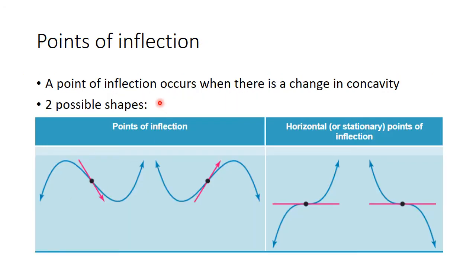Let's look at some pictures of points of inflection. A point of inflection occurs when there is a change in concavity — we would have concaving down, then at the point of inflection it becomes concaving up, or concaving up then concaving down. Note a very important point: the gradient of the tangent at this point doesn't have to be zero. The important part of points of inflection is the concavity change. You can also have a horizontal or stationary point of inflection, where the gradient itself is zero but the concavity also changes.